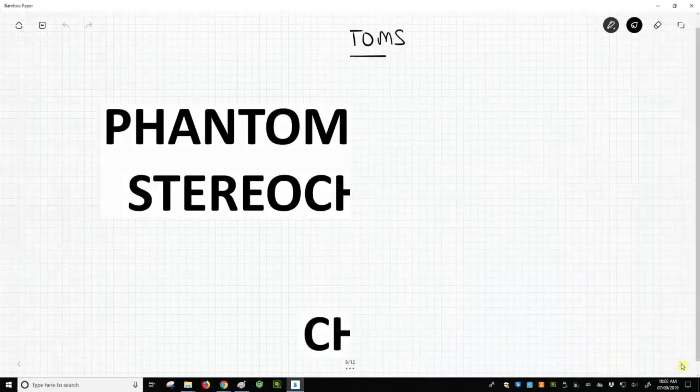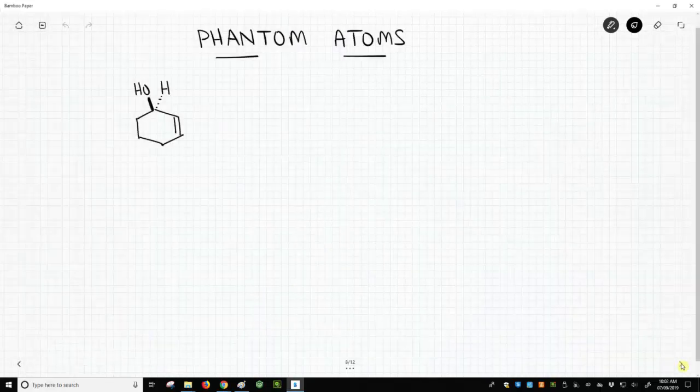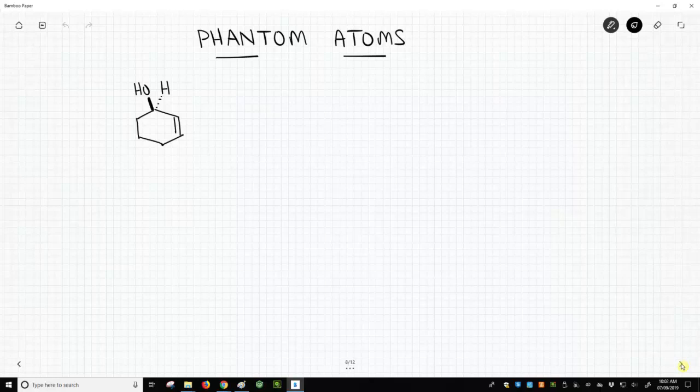This has relevance in stereochemistry, and you encounter phantom atoms when you have pi bonds, and you have to expand these pi bonds and create artificial atoms as placeholders so we can apply the Cahn-Ingold-Prelog rules.